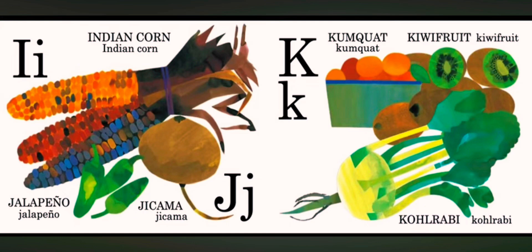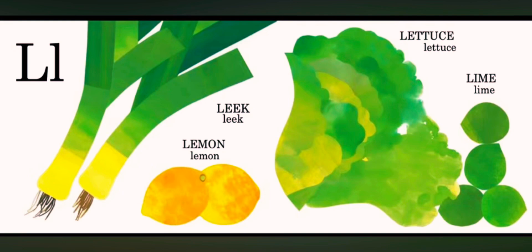K is for kumquat. K is for kiwi fruit. L is for leek. L is for lemon. L is for lettuce. L is for lime.